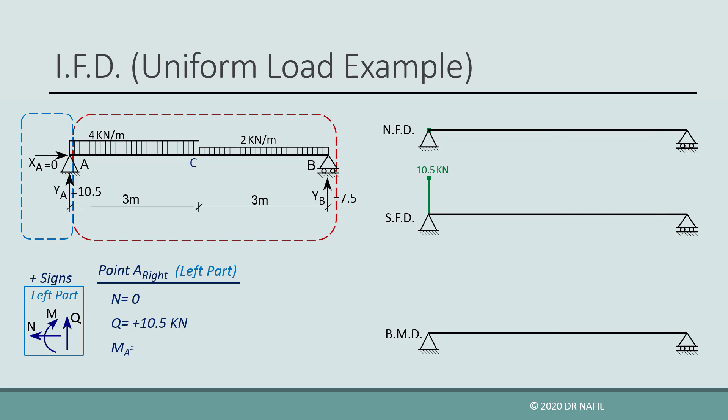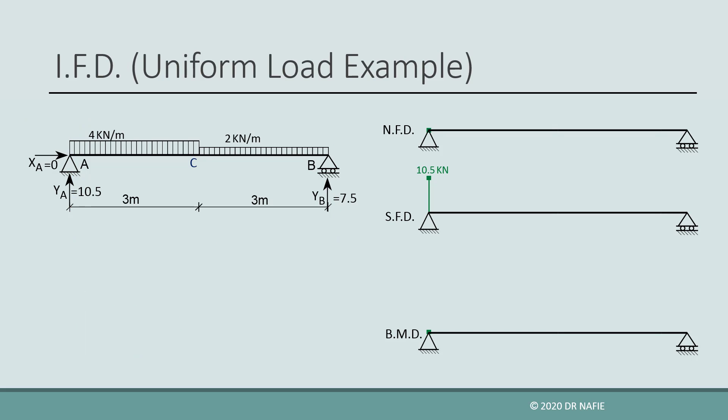To find the value of the internal bending moment, we take the moment of all the forces located in the left part about the considered point, which is point A. The moment about point A will be zero because all the forces in the left part pass through A. Next, we evaluate the internal forces at the next critical point, which will be point C located at the end of the first uniform load. Because there is no concentrated load at point C, the internal forces just to the left and just to the right of point C will be identical, so we do not need to evaluate them separately.